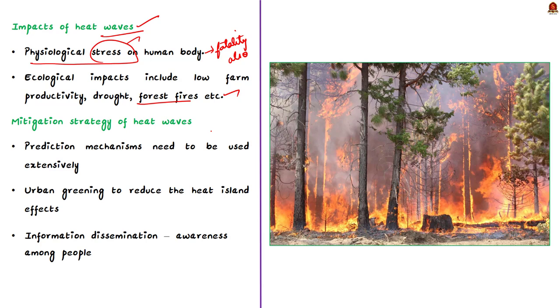Now talking about the strategy to mitigate heat waves. The prediction mechanisms like the one mentioned in today's article need to be used extensively to increase the preparedness of the government. Urban greening needs to be done by city administrations to reduce the heat island effects. And information dissemination needs to be done effectively to make people aware of the health hazards brought by the heat waves.